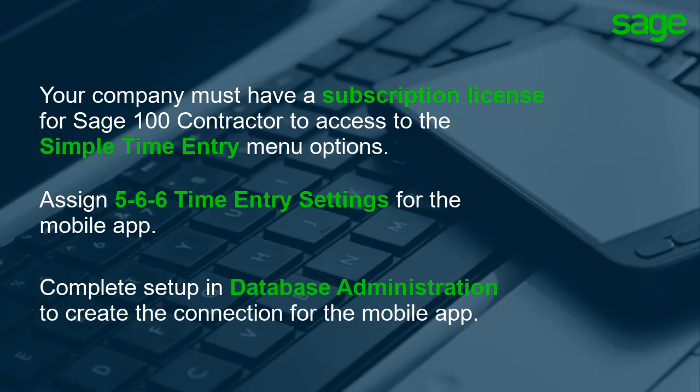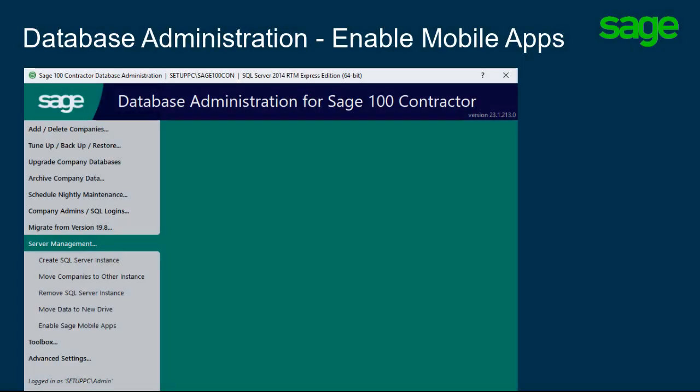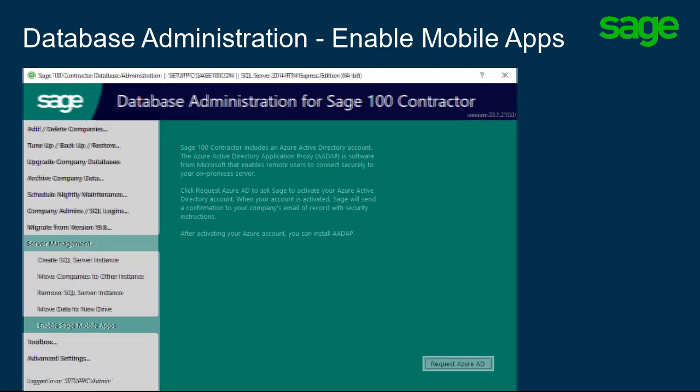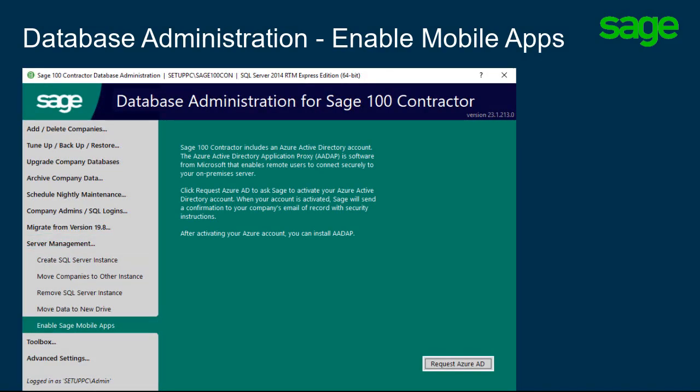You also need to complete some setup in Database Administration to create the connection for the mobile app before you can invite users or use the mobile app. In Database Administration, select Server Management, then select Enable Sage Mobile Apps.